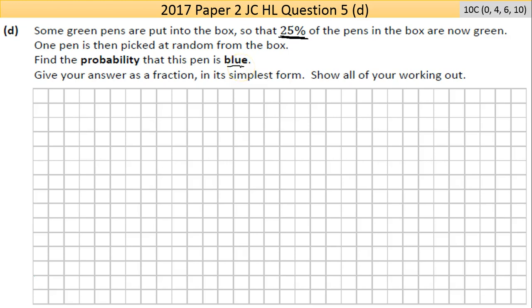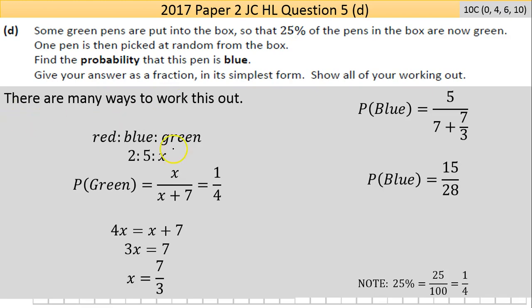One pen is then picked at random from the box. Find the probability that this pen is blue. Now it was 5/7 but now there's more than seven pens in the box, so that probability is gone. We need to find out the new probability. It says give your answer as a fraction in its simplest form and show all your workings.